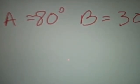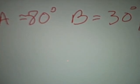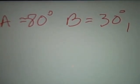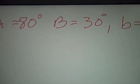So for example, if you're given angle A is let's say 80 degrees, angle B is 30 degrees, and little b is 18 centimeters, we should be able to find side a.